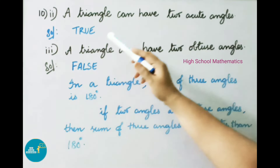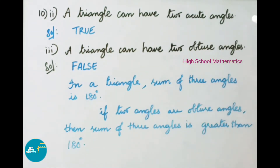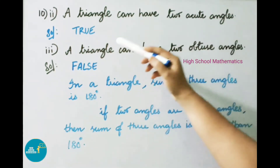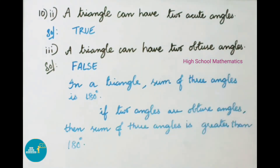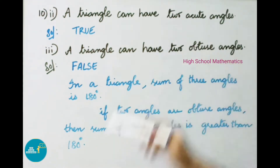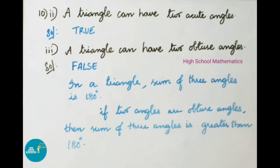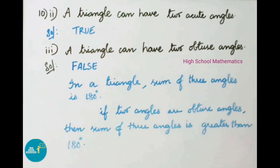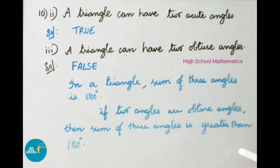Second: a triangle can have 2 acute angles — this statement is true. Third: a triangle can have 2 obtuse angles — this statement is false, because if 2 angles are obtuse, their sum already exceeds 180 degrees, so the sum of all 3 angles would be greater than 180 degrees.